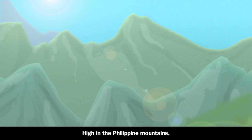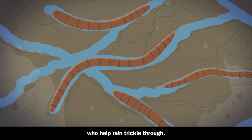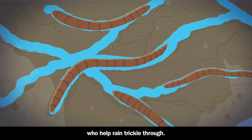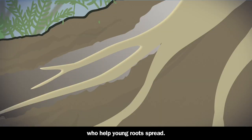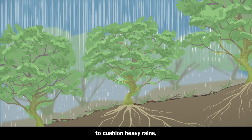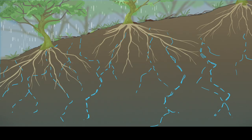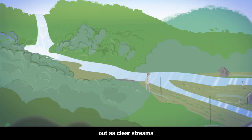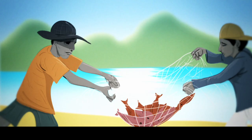I wanted to show you what this would look like without any camera movement at all. And because it's so dull, I went ahead and sped up the narration a little bit. 'High in the Philippine mountains, a mossy forest. Perfect for earthworms who help rain trickle through, served up by native mice, who help young roots spread so trees grow strong.' You could see just how disjointed everything looks without the camera moves connecting everything in this forest together.